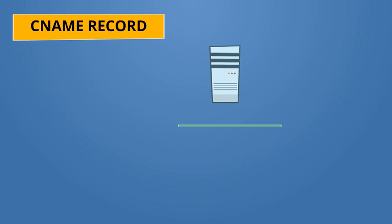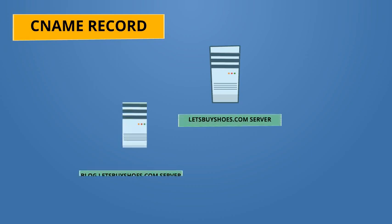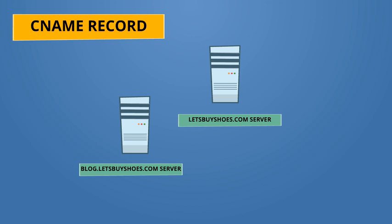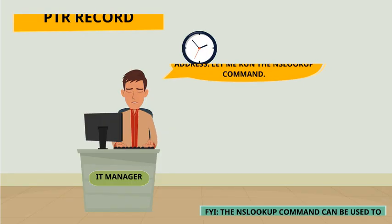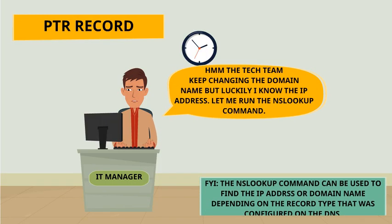The next common record type would be the CNAME record, which is about making an alias to an A record. For example, your A record would be letsbuyshoes.com, whereas your CNAME record would be blog.letsbuyshoes.com, which is the alias to your A record.